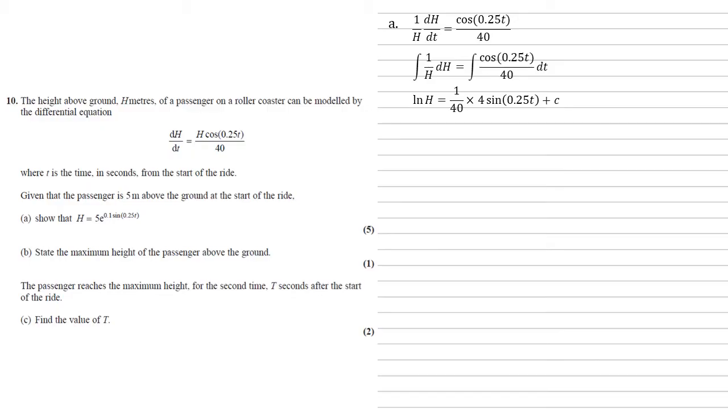The integral of 1 over h is ln h. The integral of the right hand side is a 40th times 4 sin 0.25t. Now these are both indefinite integrals, so we've got a plus c on there as well.